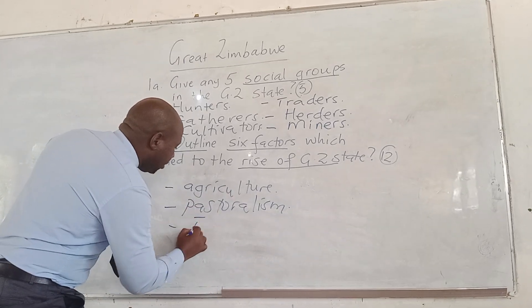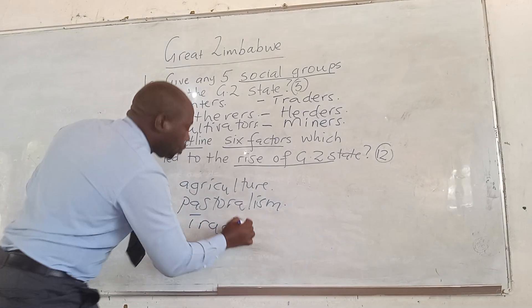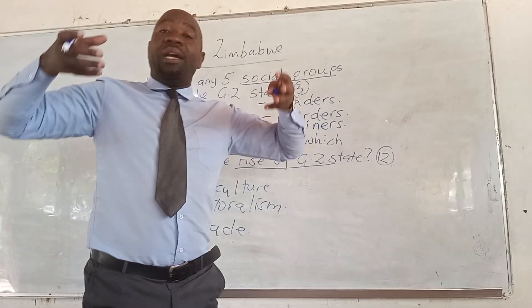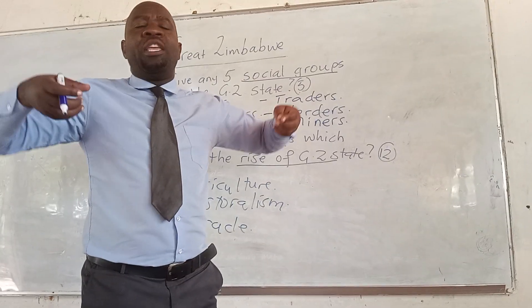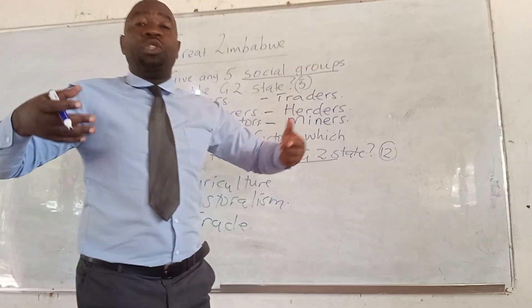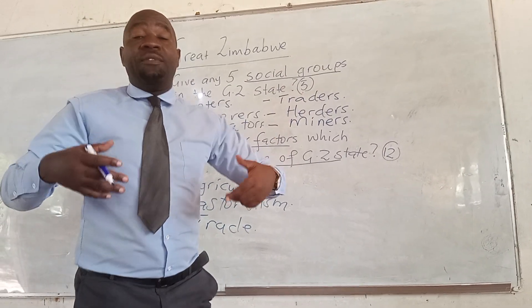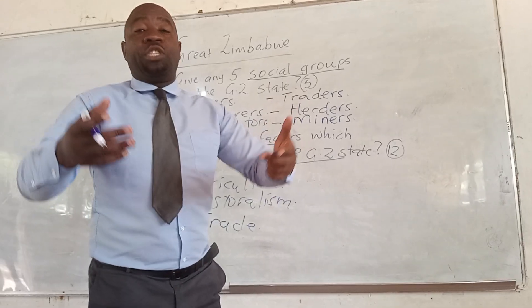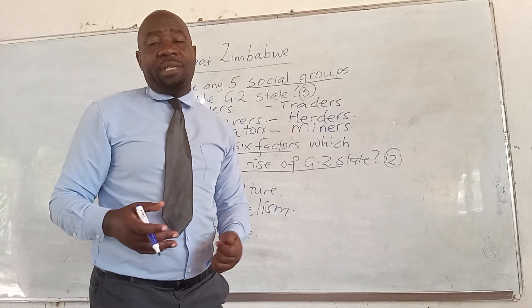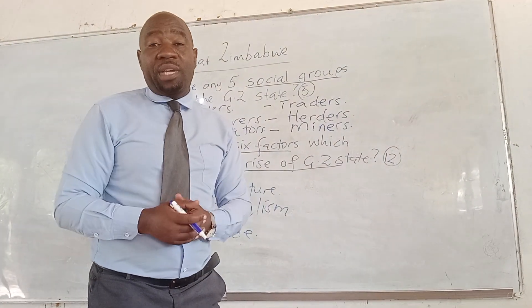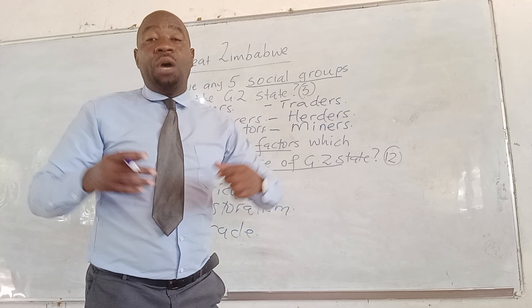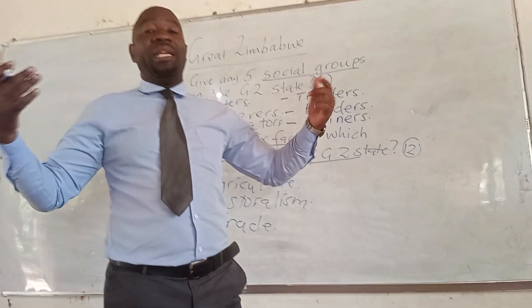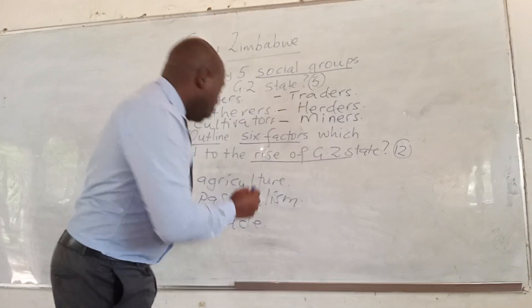Then we also talk about trade. Trade also led the state to rise, to become prominent. It is because they were trading with foreigners, and from this trade they were in a position of getting different valuable items. Items that they were getting from trade led the state to be known, to be prominent, to rise.